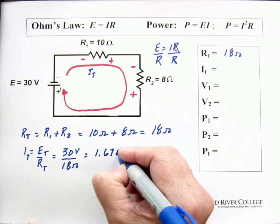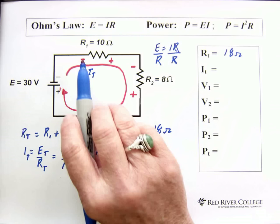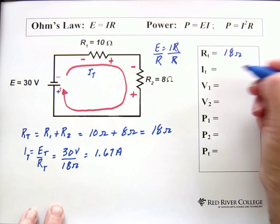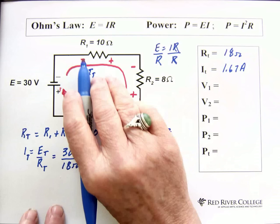Now, let's say we want to solve for the voltage drop across R1. Actually, let's just write this down. 1.67 amps. If we want the voltage drop across R1, we're going to use, again, Ohm's Law.